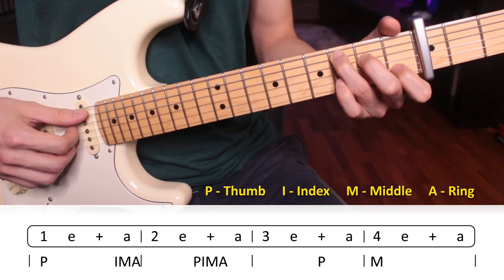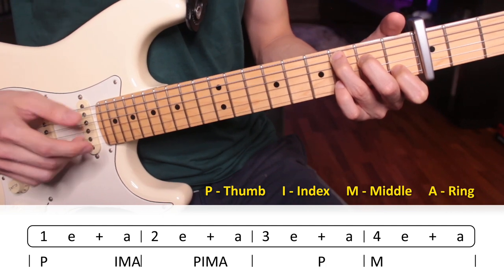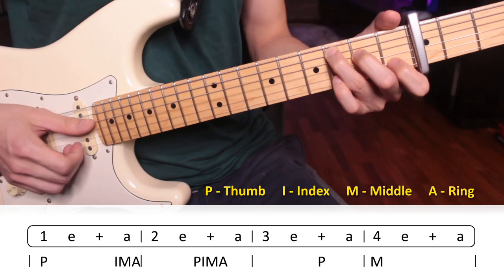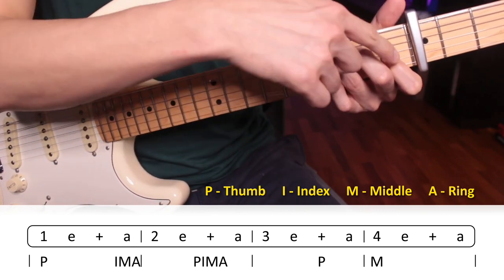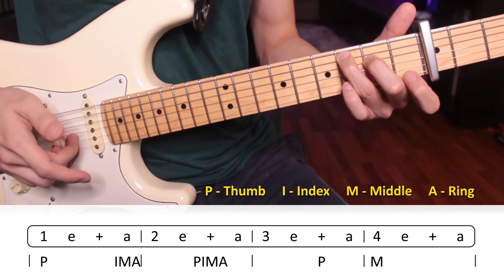And then for the C major, on the 4th count, instead of playing the 3rd string, you're going to play the 2nd string and do a pull-off. So you're going to pull-off from the 1st fret to the open string of the 2nd string, and then you're going to play the 3rd string.